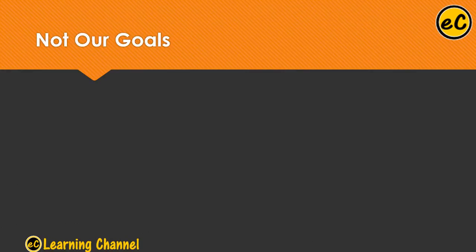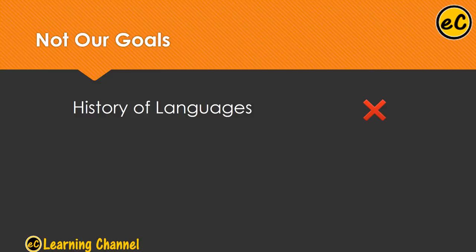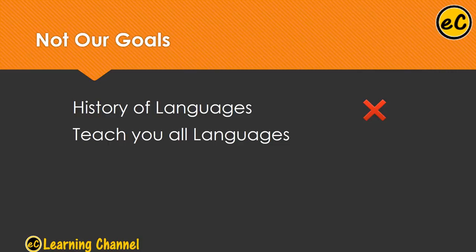This course doesn't include the following: the history of languages — we are not trying to emphasize on the history of languages. We don't try to teach you all of the programming languages available, because it will take too much time and it is not practical. This course is not an algorithm course; we don't teach you how to do programming. We just focus on the language features and the comparison of different programming languages.